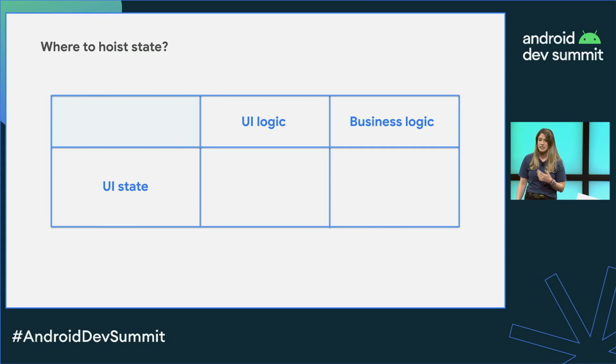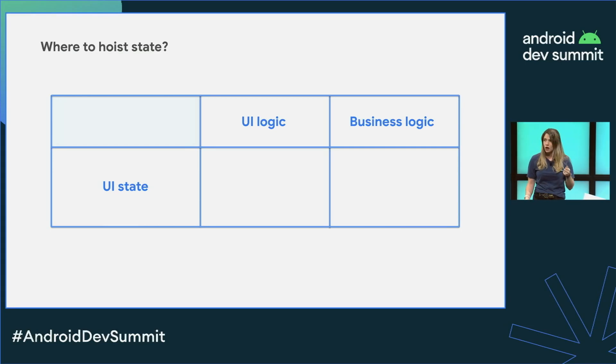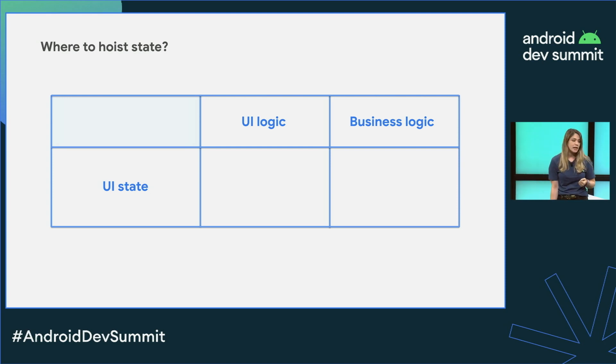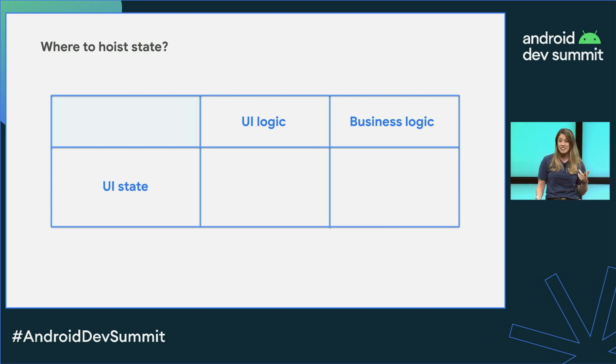And what state are we referring to? UI state — what you need to display in your app, together with the internal state of UI elements. In any Android app, there are also two types of logic: UI logic, or how to display your state on the screen (for example, how to show a list of messages), and business logic, which are the rules that make your app your app, like where do these messages come from and your data sources. Where you hoist your state depends on what type of logic reads or writes your state.